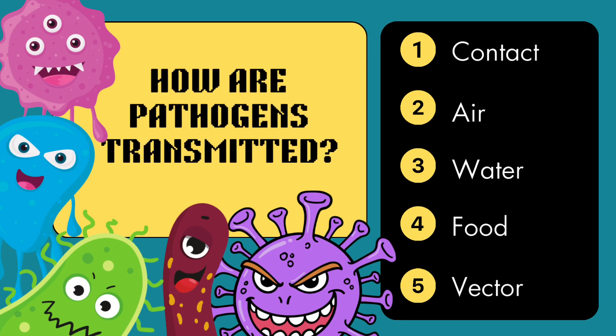Pathogens spread through various means, including direct contact with infected individuals, such as through respiratory droplets or physical touch. They can also spread indirectly through contaminated surfaces, food, water, or vectors like mosquitoes and ticks. Understanding these modes of transmission is crucial for implementing effective measures to prevent the spread of infectious diseases.